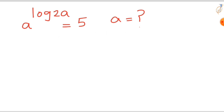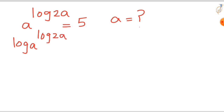Let's start. We have a raised to the power of log 2a, that is equal to 5. In order to solve this question, first we need to take log on both sides: log of a raised to the power of log 2a equals log 5.